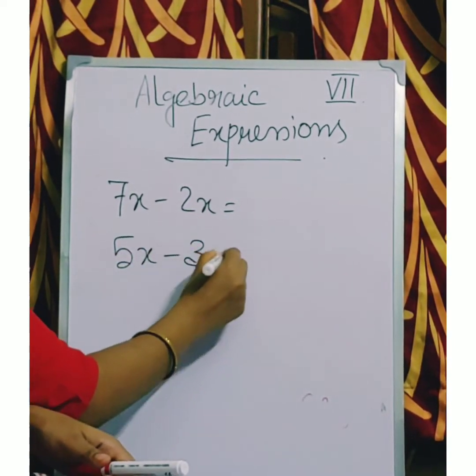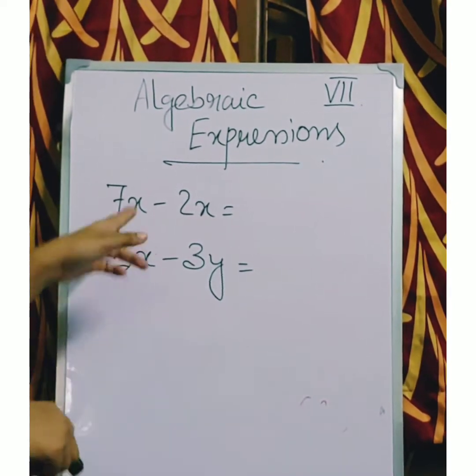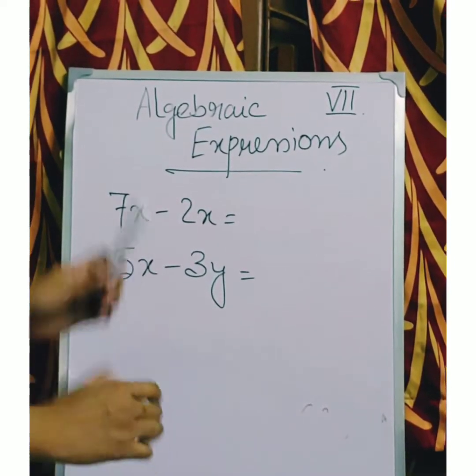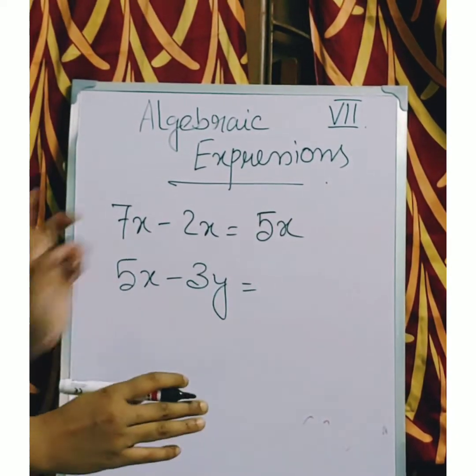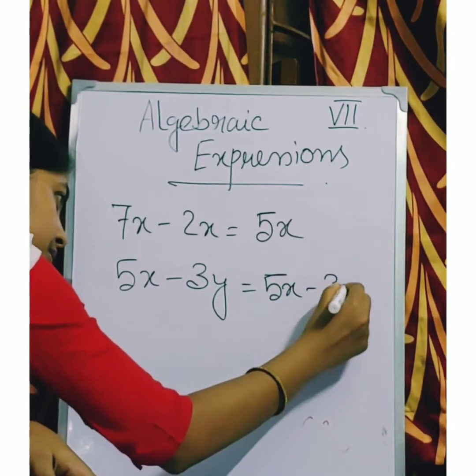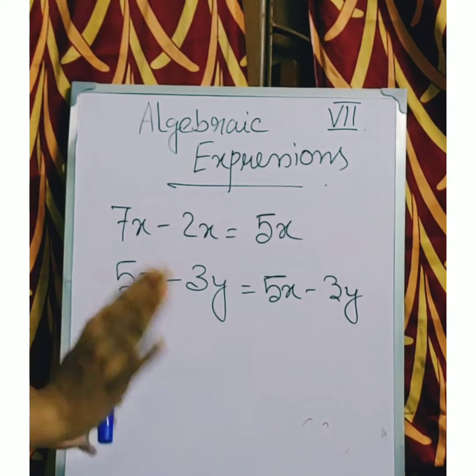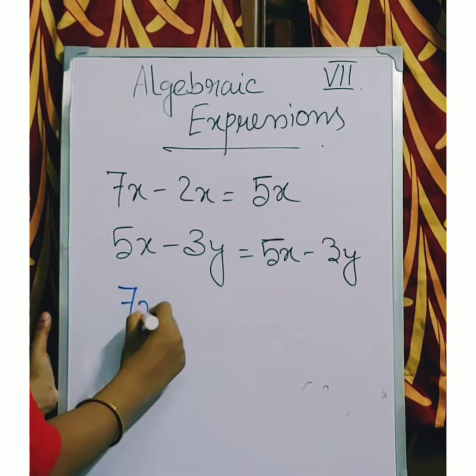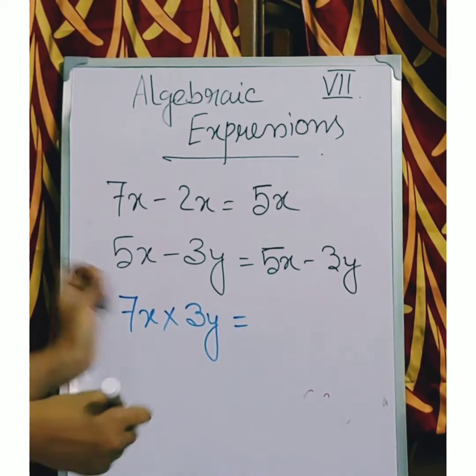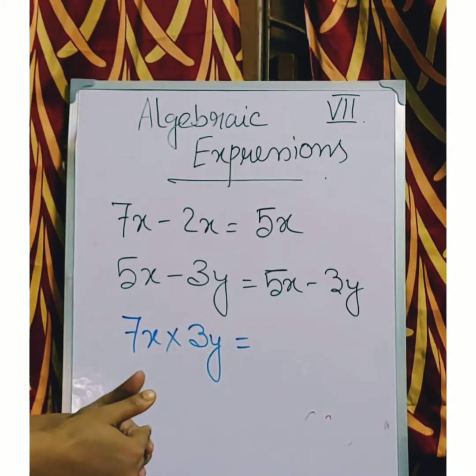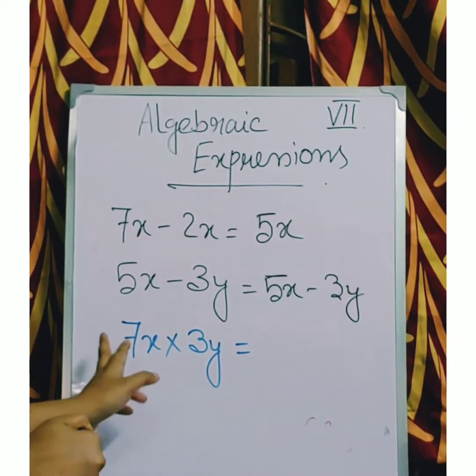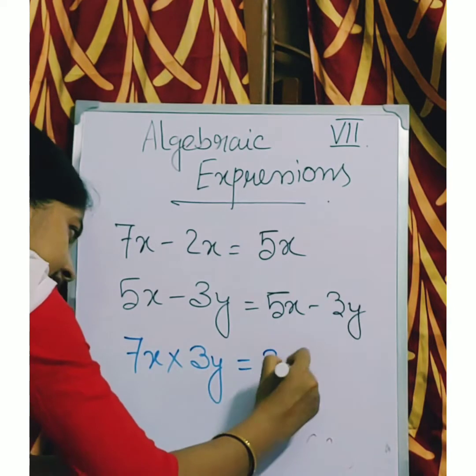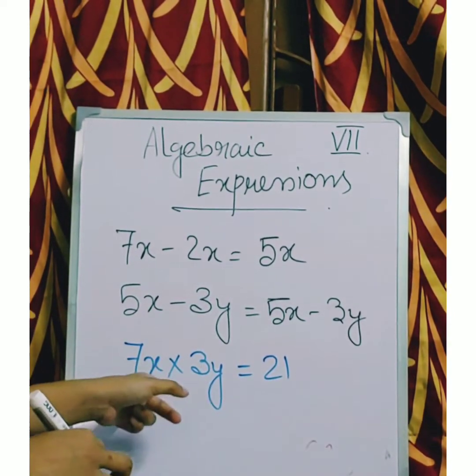5x minus 3y. Same thing is applicable for multiplication. So in multiplication what we will do. 7x into 3y. Can we multiply? When the variables are different can multiplication be done? Yes. The answer is yes. Now here we can see that 2 constants are here. 7 into 3. So we will multiply the constant. 3 7's are 21. And we can multiply the variables also. x into y, we will write it xy.